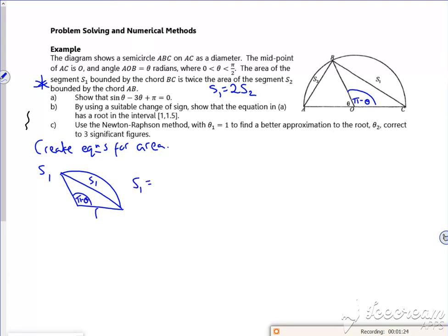So S1 would be the area of the sector, which is a half R squared pi minus theta, minus the area of the triangle, half R squared, sine of pi minus theta.